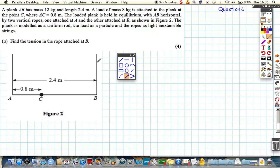It's being suspended by two vertical ropes, so we know there must be a tension in the rope here which we're going to call tension at B. Also, there must be a tension in the rope A, which we're going to call tension at A. The plank itself is modeled as a uniform rod, which means the weight acts at the centre. So we know that the weight acts exactly down at 1.2 metres away from A and from B. Because it weighs 12 kilograms, the weight is 12g, g acceleration due to gravity.